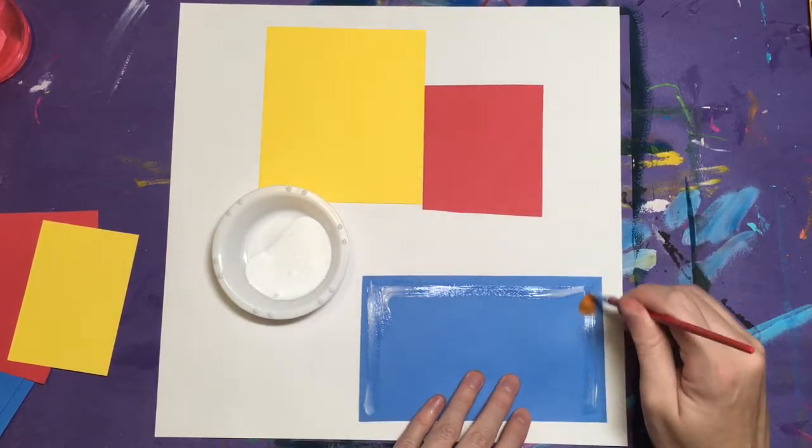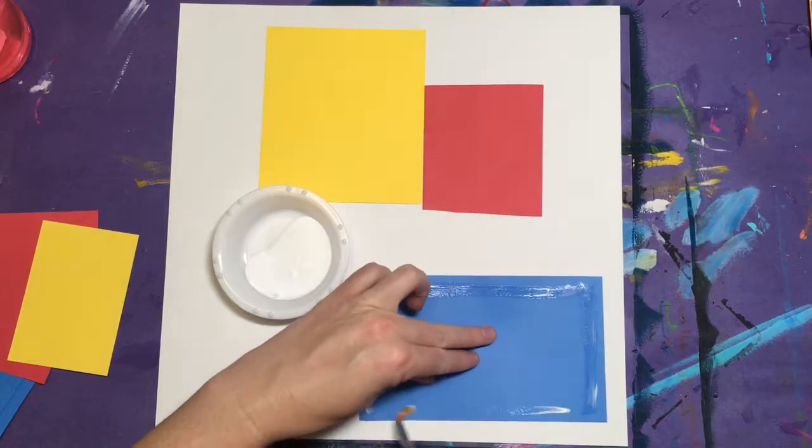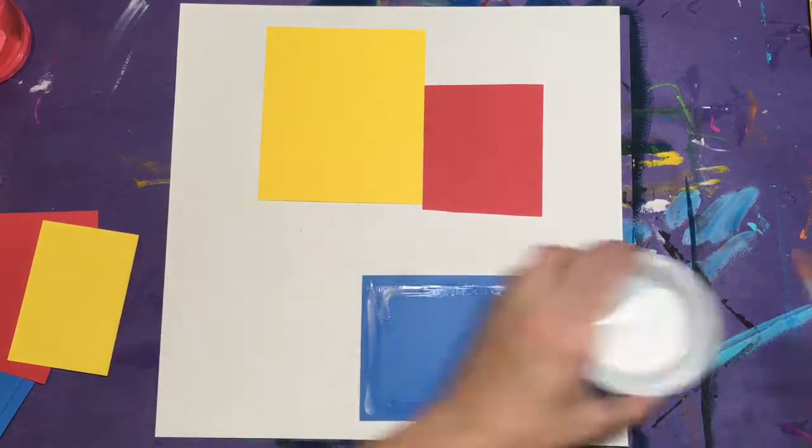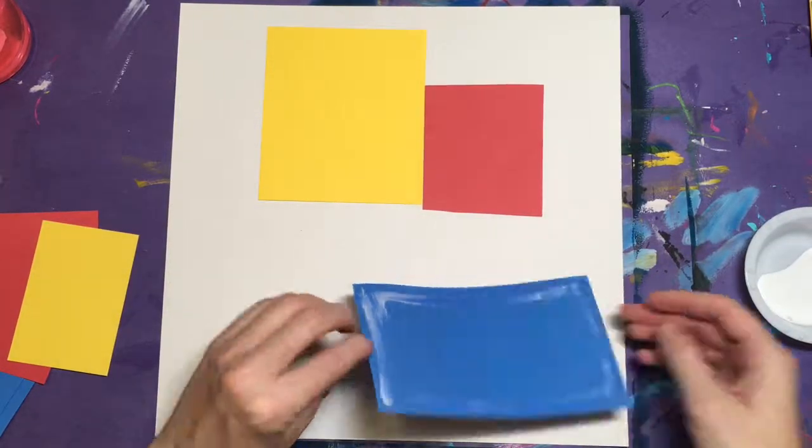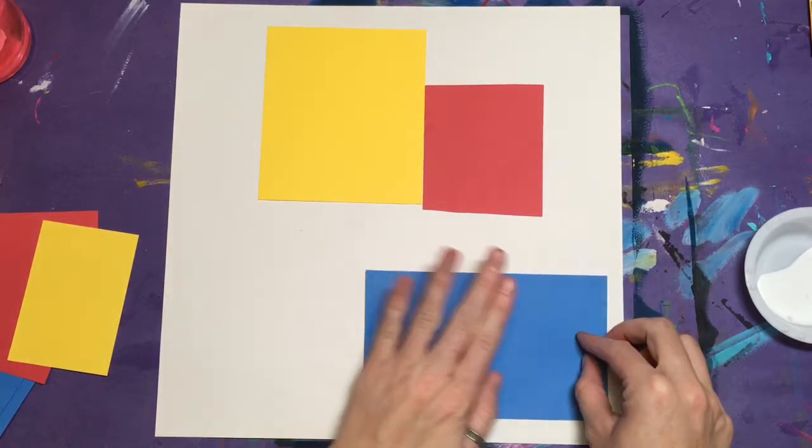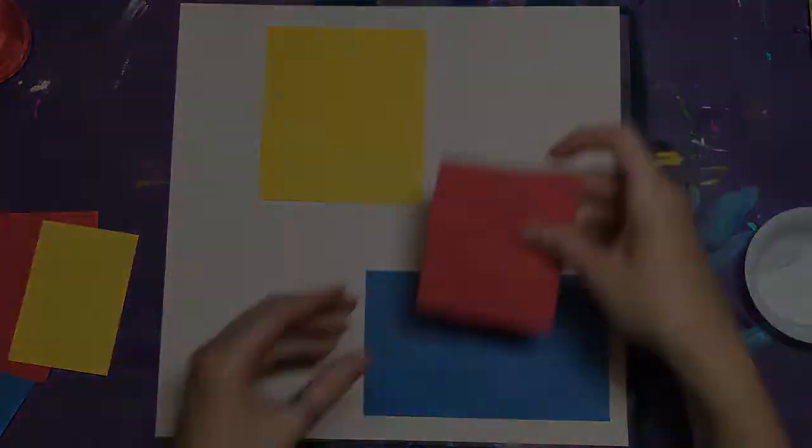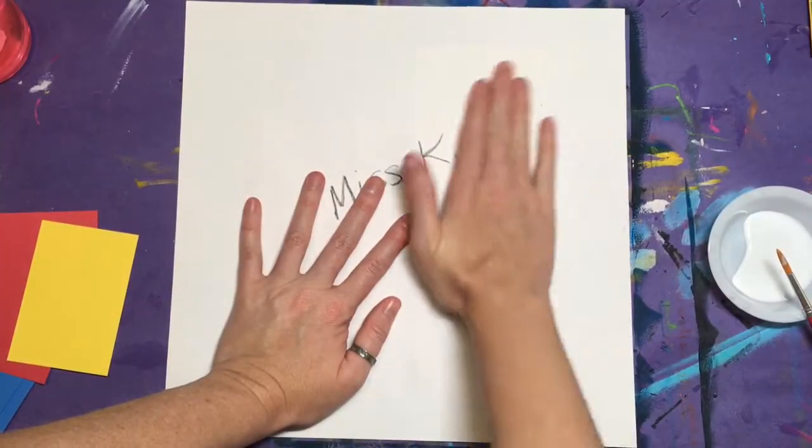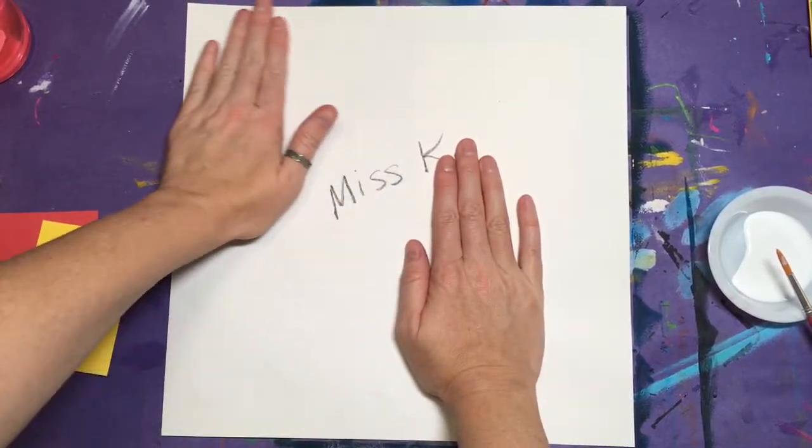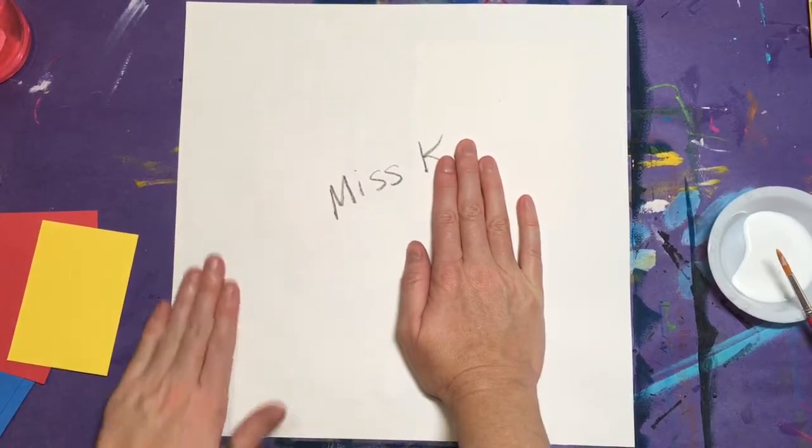Draw a square of glue on the back of each primary colored shape and then turn it over and attach it to your white background. Once you have all of your squares glued, turn your white paper over to the back and give it a nice massage. Paper likey.